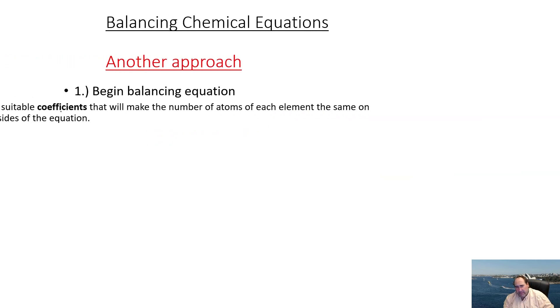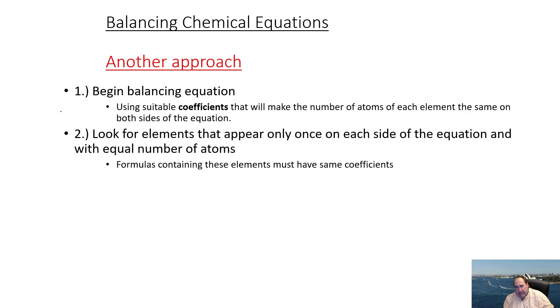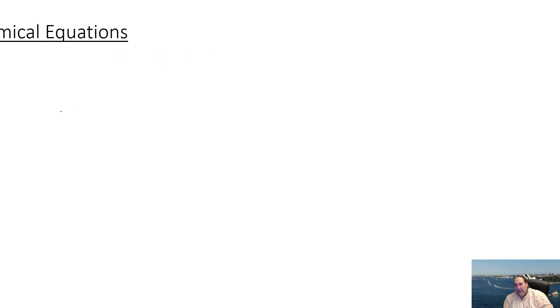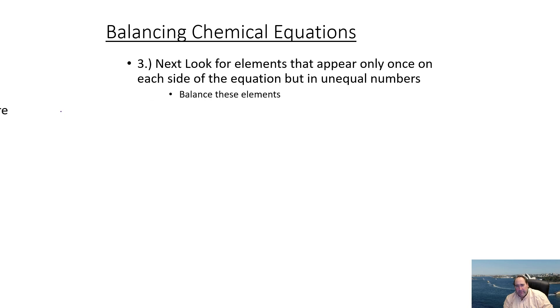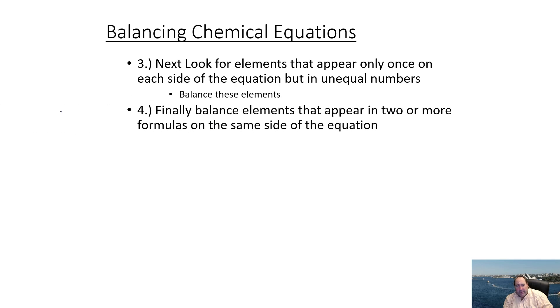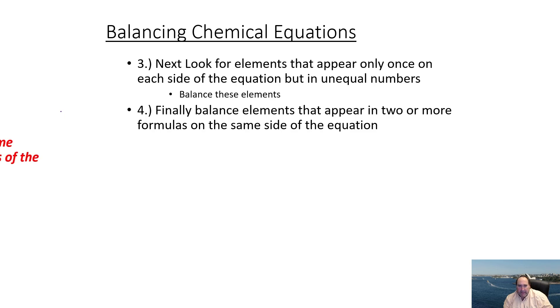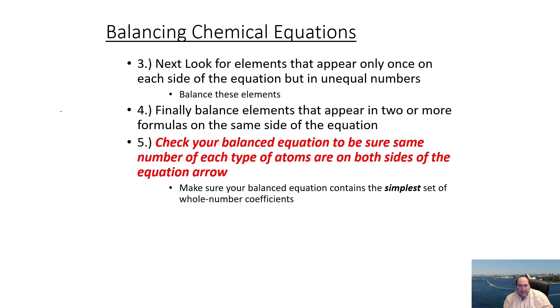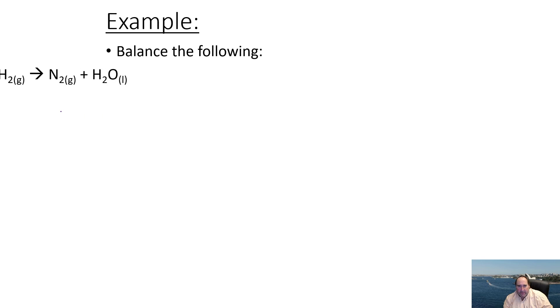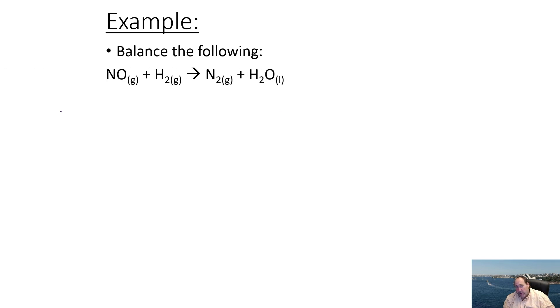Here's an alternative approach — a similar idea. Look for elements that appear only once on each side and balance those first. Look for elements in unequal numbers on each side, balance them, then check. Let's take a look at some examples and go through what we should be doing.